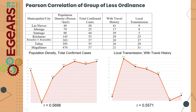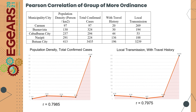Pearson correlation of the group with less ordinances includes Las Nieves, Jabonga, Santiago, Kitcharao, Remedios T. Romualdez, Tubay, and Magallanes. The correlation coefficient of population density and total confirmed cases is 0.5698, while for local transmission and travel history it is 0.5571. For the group with more ordinances, the Pearson correlation of population density and total confirmed cases is 0.7985, showing a strong correlation, while for local transmission and travel history it is 0.7975, also showing a strong correlation.